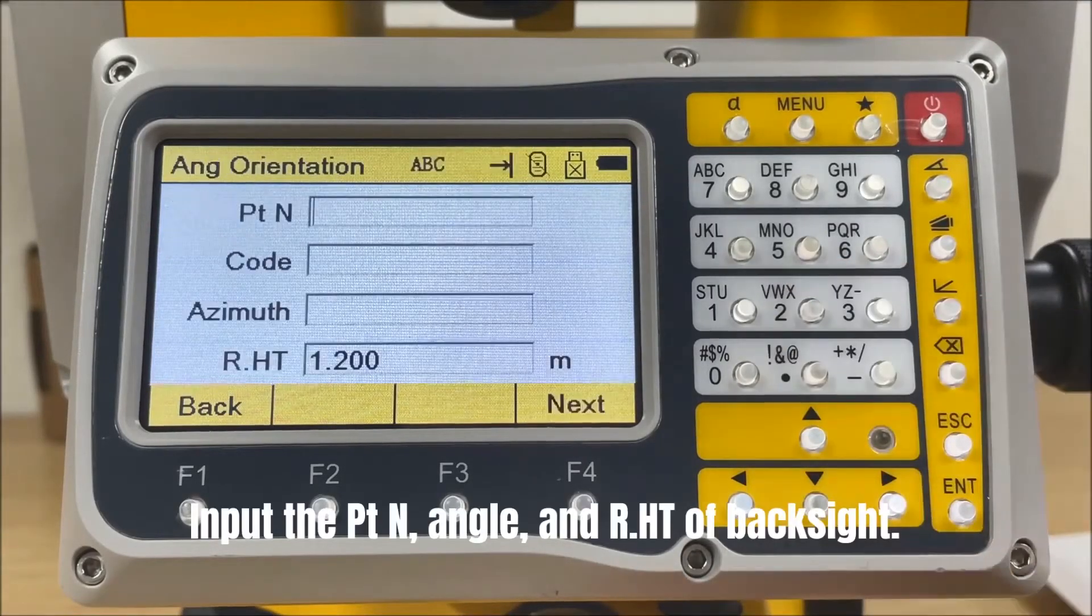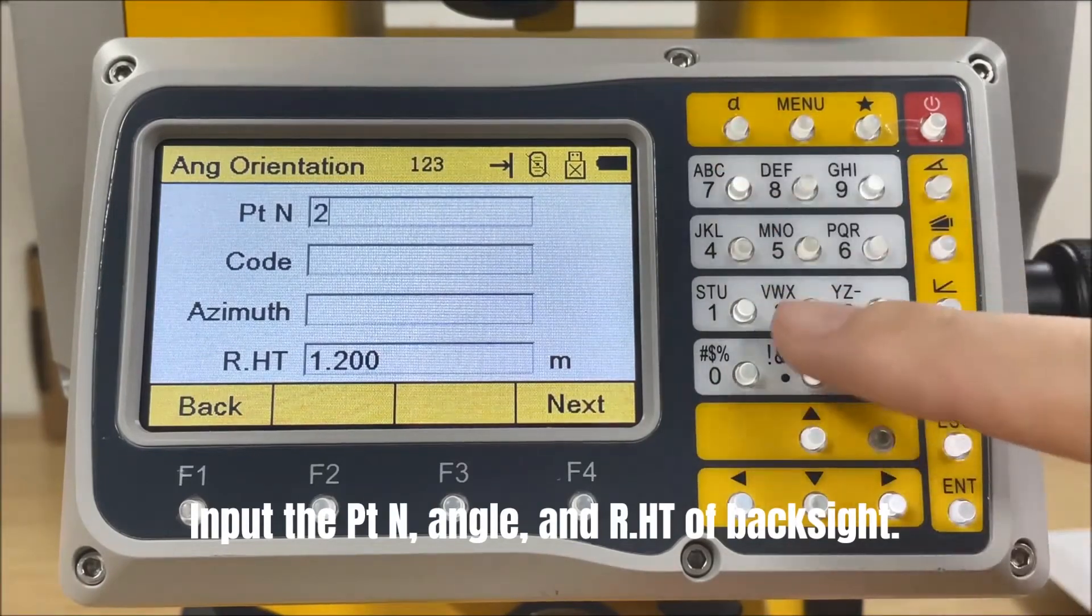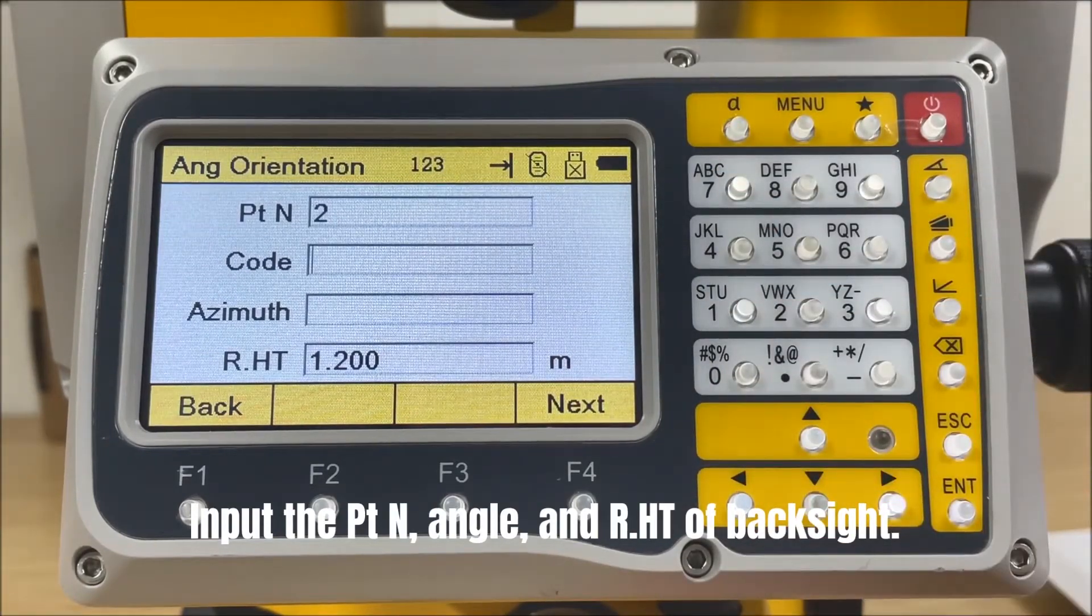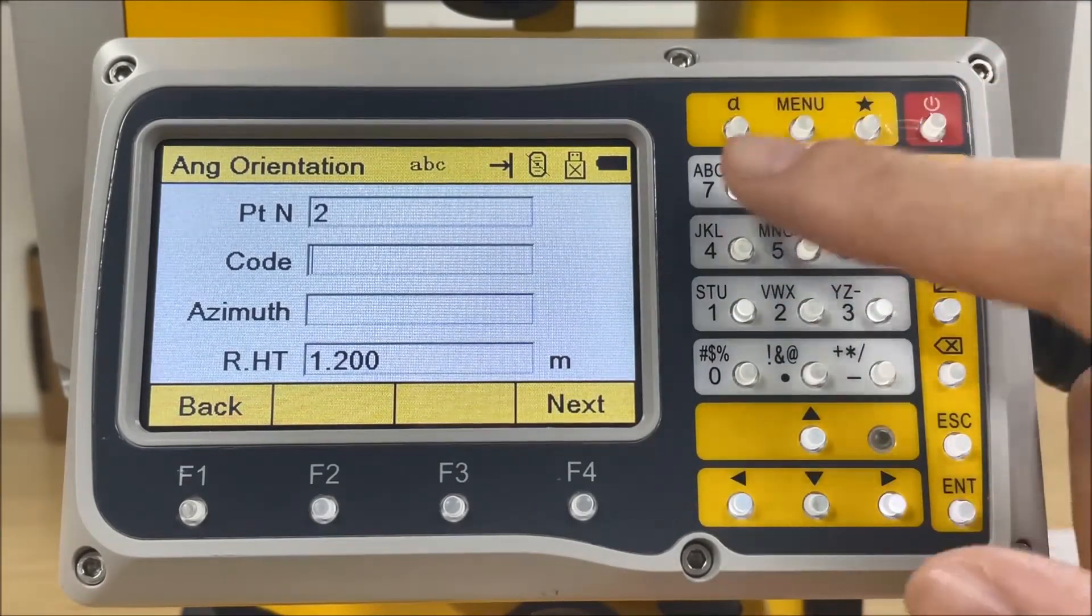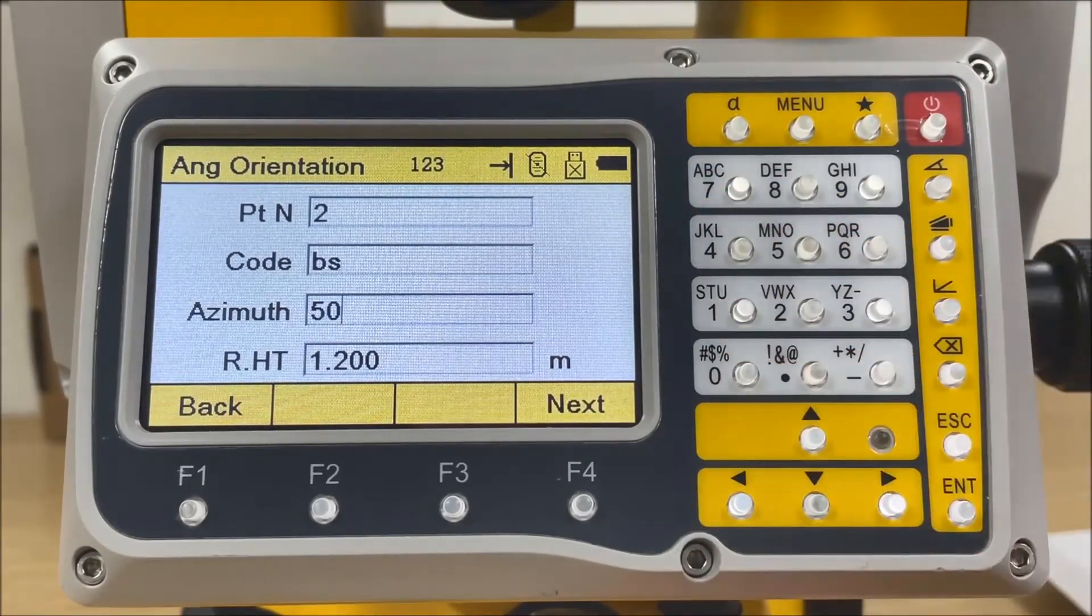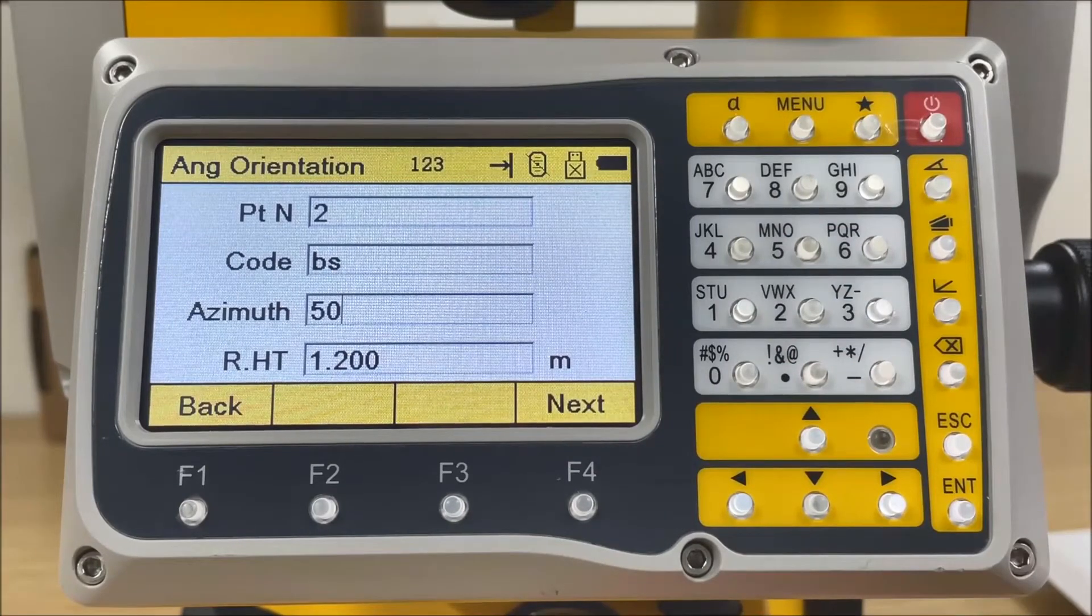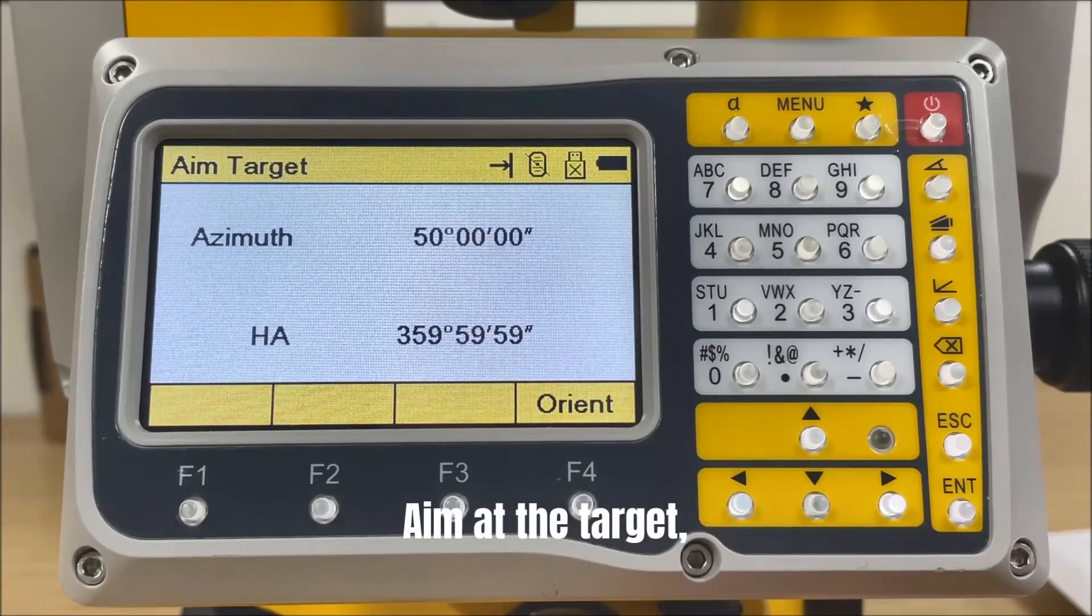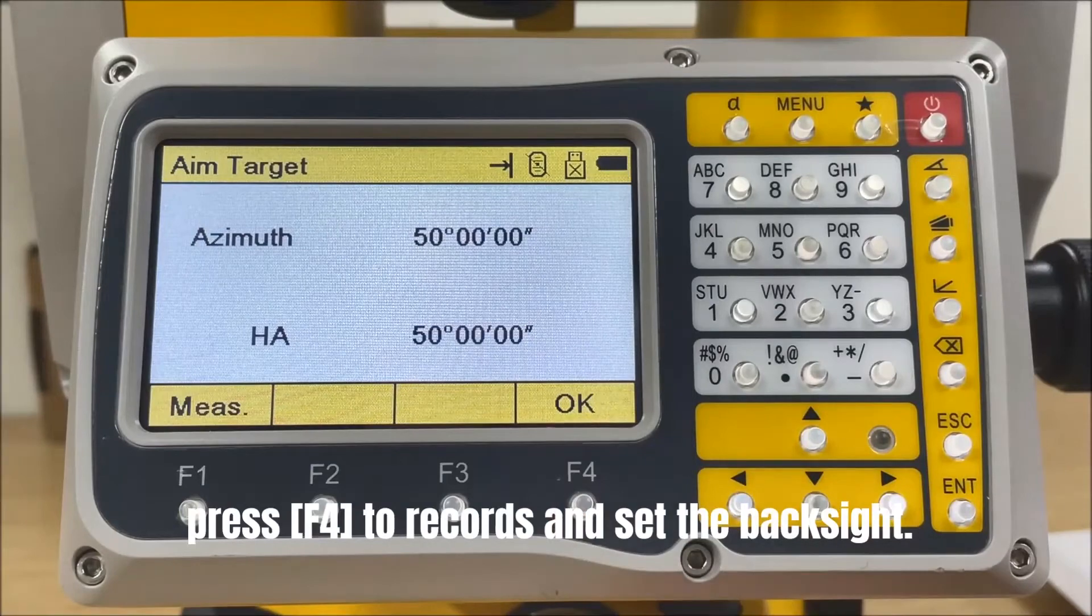Method 2: With angle. Input the point name, horizontal angle, and reflector height of back site. Aim at the target. Press F4 to record and set the back site.